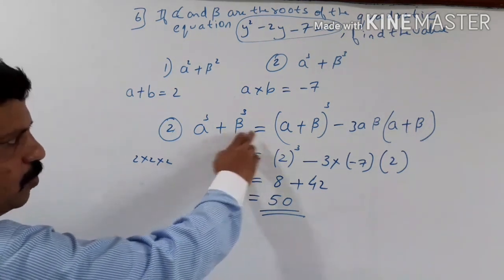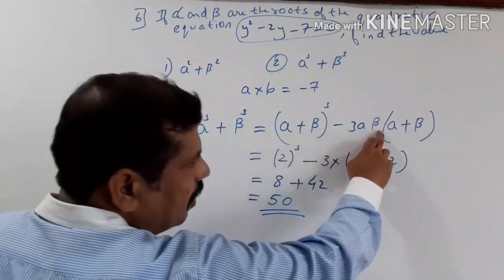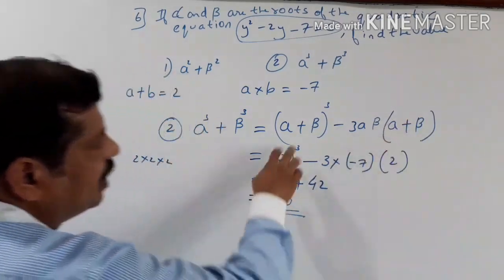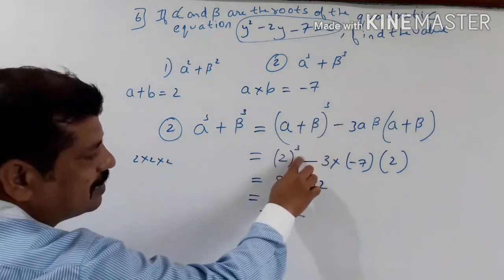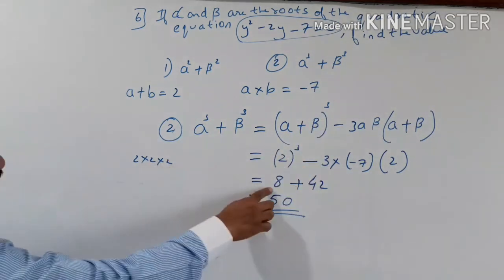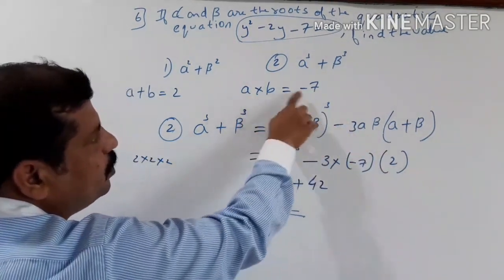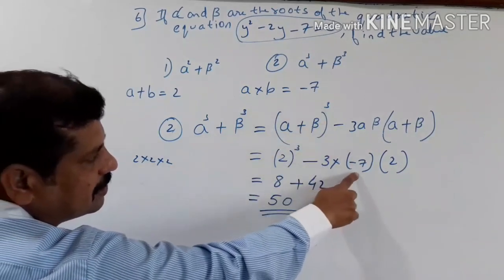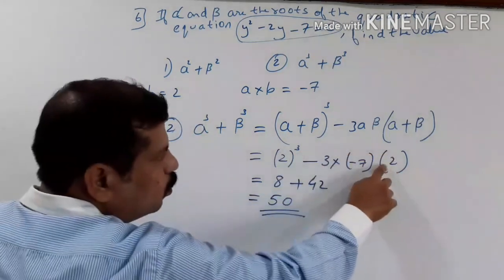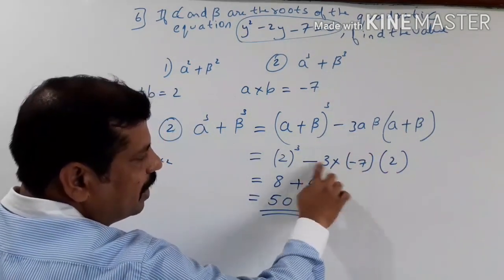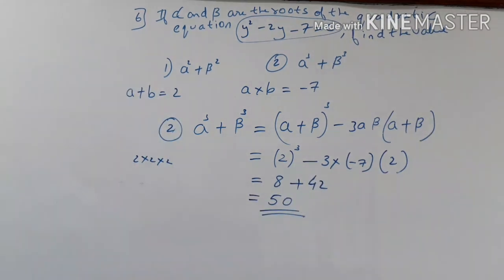Verification: alpha cubed plus beta cubed equals alpha plus beta cubed minus 3 times alpha into beta times alpha plus beta. Substituting 2 cubed equals 8, minus 3 times minus 7 times 2 gives plus 42. Adding: 8 plus 42 equals 50.